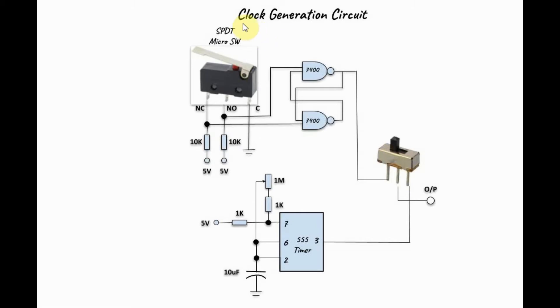This is the circuit diagram of the clock generation circuit. This part of the circuit is used to generate the single step clock signal, where the micro switch is connected to a NAND gate debouncing circuit, the output of which gives us a single step clean pulse.